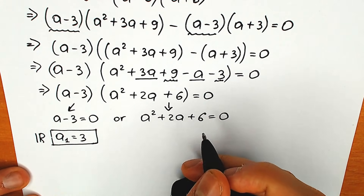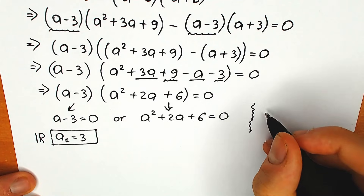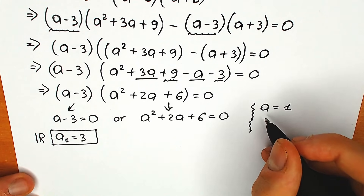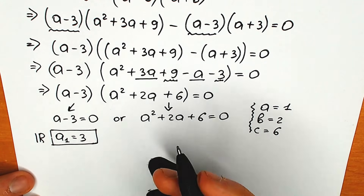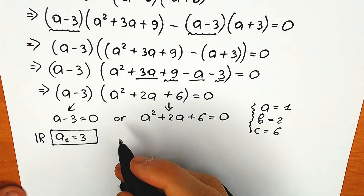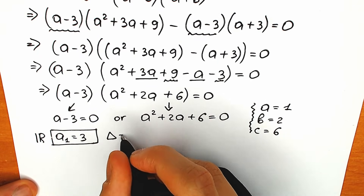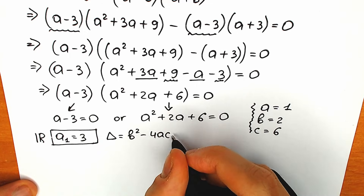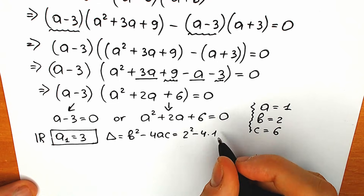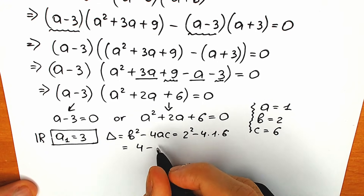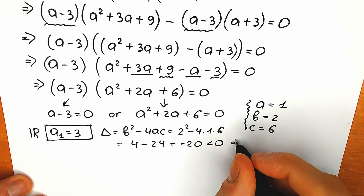The second parenthesis is a quadratic equation. I'm going to use the method of coefficients: a equals 1, b equals 2, and c equals 6. Let's find our discriminant: D equals b² minus 4ac equals 2² minus 4×1×6 equals 4 minus 24, so our discriminant equals minus 20. Since it's less than zero, we have two complex roots.